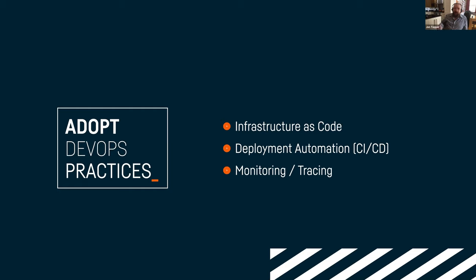Deployment automation is the other key practice — CI and CD, being able to release small batches of changes on an automated basis with automated testing. This is a great way of mitigating risk, as long as your test suite is adequate. You can avoid pushing broken software into production by running test suites on changes. Monitoring and tracing is also still surprisingly absent in many organizations — flying blind introduces unnecessary uncertainty.